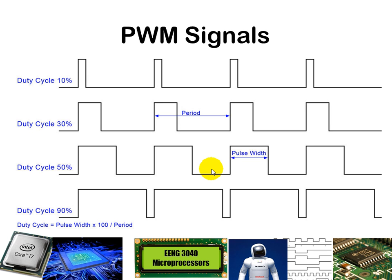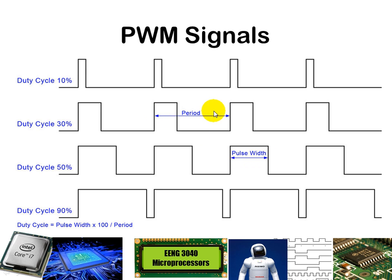Here you can see some examples of varying pulse width modulated signals. A duty cycle of 10% indicates a motor typically operating at about one-tenth of its maximum speed — the ratio of time high to time low is 1 to 10. Here we see 30%, here 50% which is about half speed, and here 90%. The pulse width is how long you are high, and the overall period is the total time high and low combined in any given cycle. That ratio, expressed as a percentage, is your duty cycle.